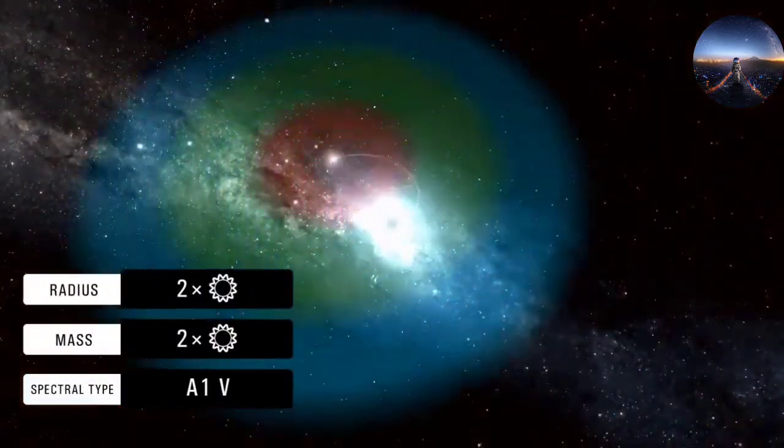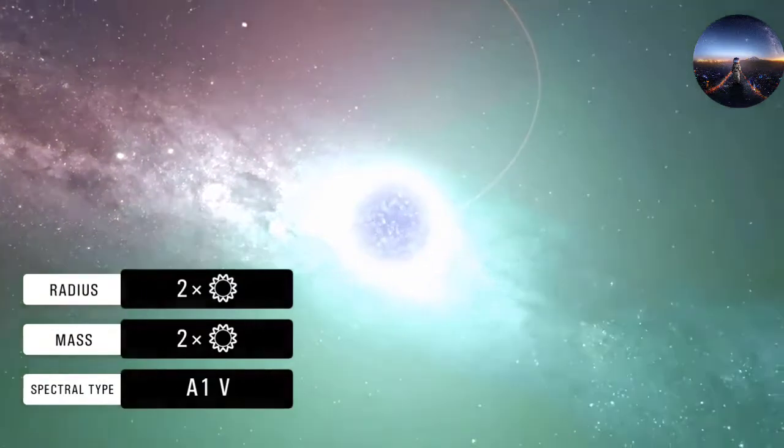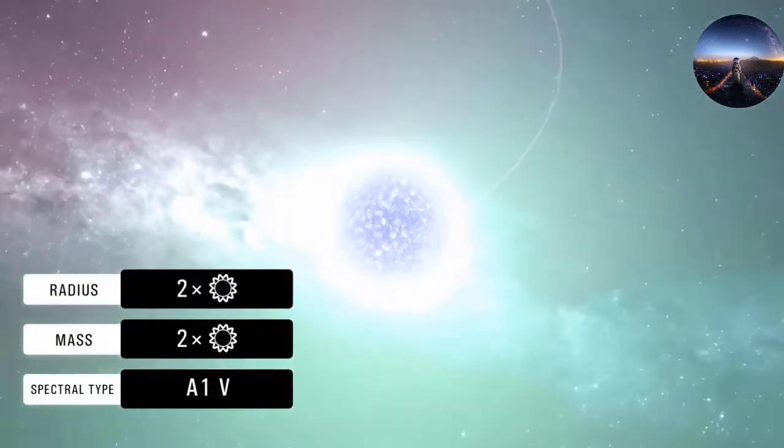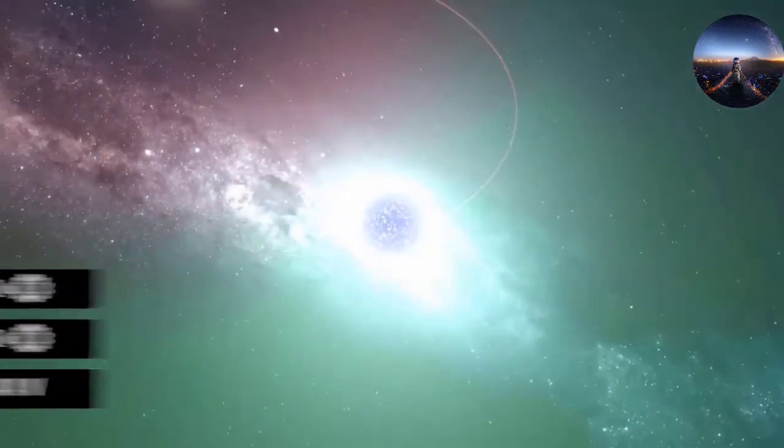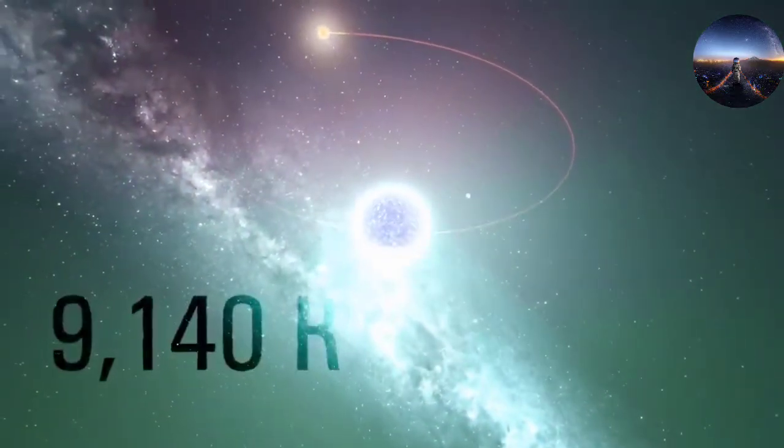The primary stars in all three binaries are all slightly bigger and more massive than the sun and about as hot. The secondaries are all around half the sun's size and a third as hot.